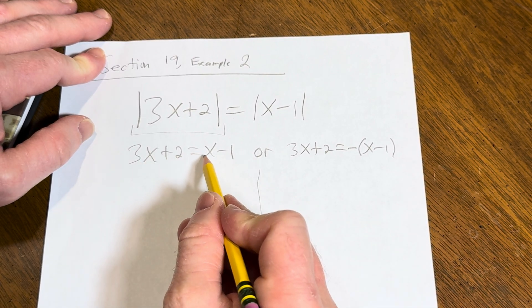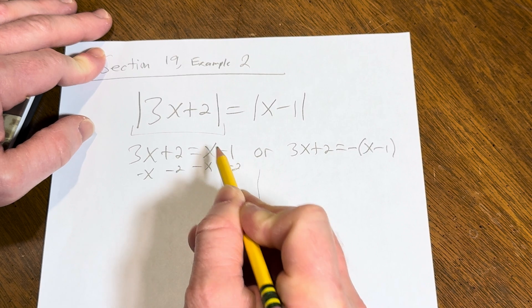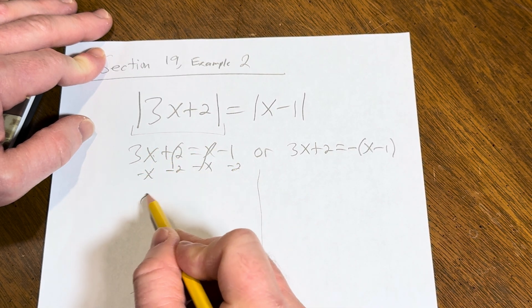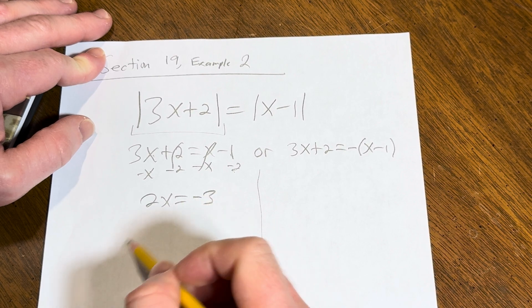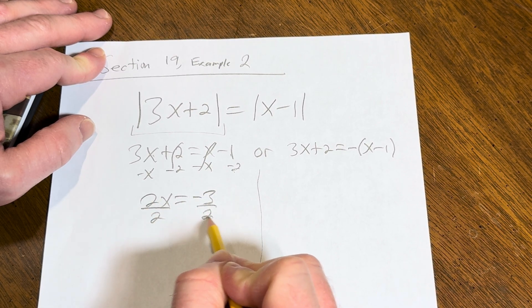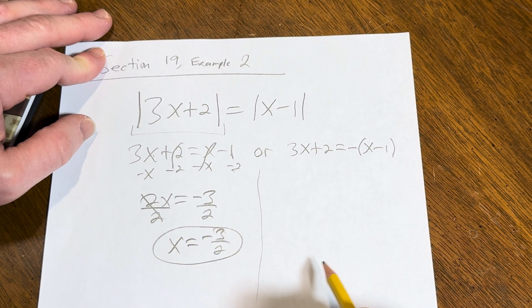So we just solve each of these. This one's pretty easy. We subtract x, subtract 2. 3x minus x is 2x. Negative 1 minus 2 is negative 3. Then we divide by 2. So we have x equals negative 3 halves.